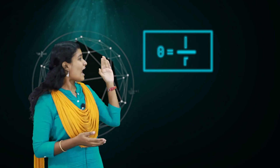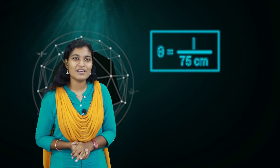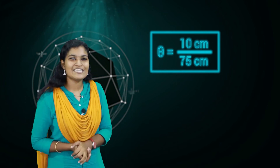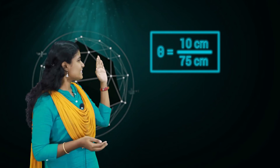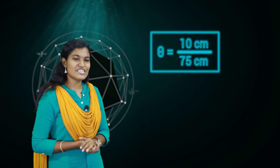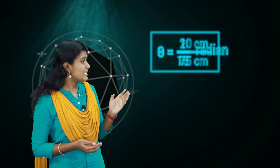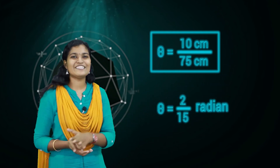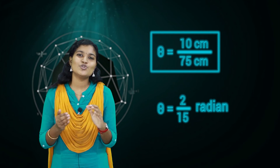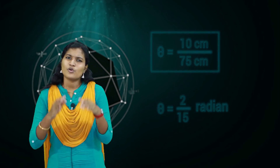Here, R = 75 cm and L = 10 cm. Then theta = 10/75 = 2/15 radian. So the angle is 2/15 radian. It is a very simple practical case — we have the direct basic equation theta = L/R and we solve it.